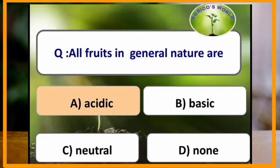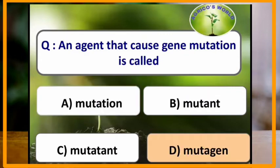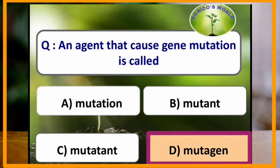All fruits in general are acidic in nature. An agent that causes gene mutation is called a mutagen. Mutagen is the agent that causes gene mutation.